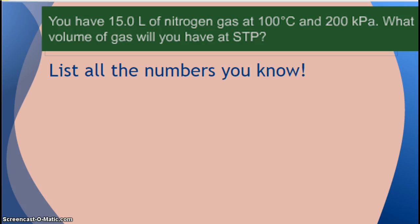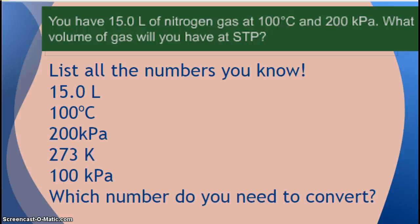All right, let's do a problem. You have 15.0 liters of nitrogen gas at 100 degrees Celsius and 200 kilopascals. What volume of gas will you have at STP? First thing you do in these problems, list all the numbers you know. So I have 15.0 liters, 100 degrees Celsius, 200 kilopascals.